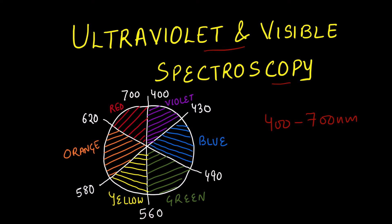Now because white light is a mixture of light of all colours, this colour chart shows you each colour corresponding to each wavelength. For instance, the wavelength corresponding to 430 to 490 nanometers belongs to the blue region of the white light. We observe the colour of an object corresponding to the wavelength of light absorption.